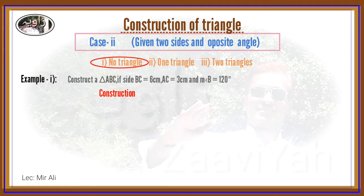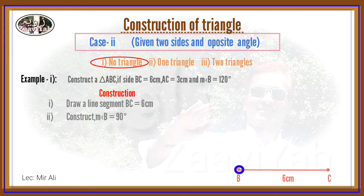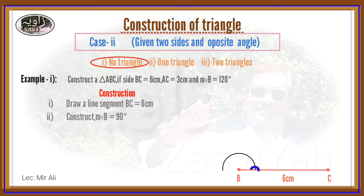Step 1: Draw a line segment BC of length 6 cm. Step 2: Taking point B as center, draw an arc of any radius. Step 3: Taking center, draw an arc to construct an angle of 60 degrees.